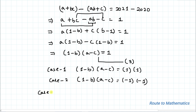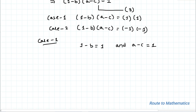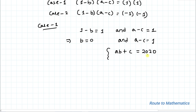In Case 1, we have 1 minus B equals 1 and A minus C equals 1. This gives B equals 0 and A minus C equals 1. Now let's substitute B equals 0 into equation 1 and equation 2 to find the values of A and C.